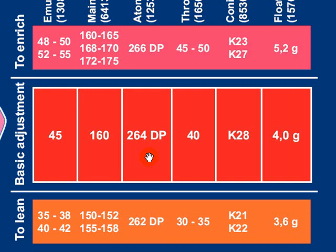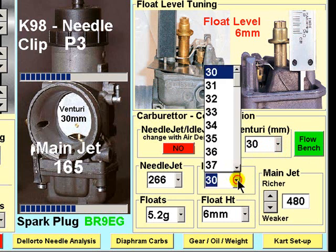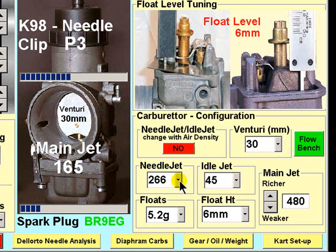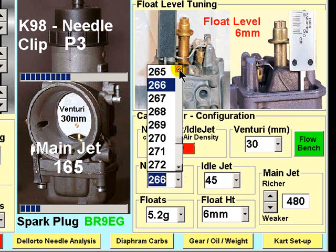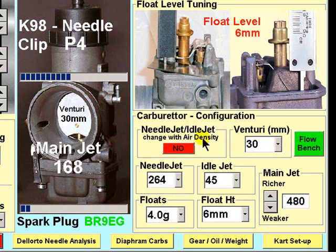we then enter these parameters into the carburetor configuration settings. Adjust the Venturi to 30mm, select the 45 idle jet combination. The needle jet, as you can remember, is a 264, and the floats 4 grams.